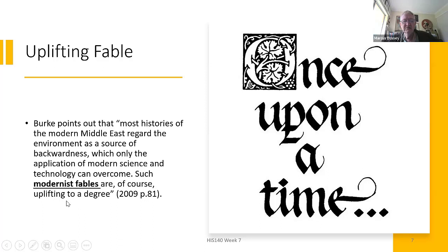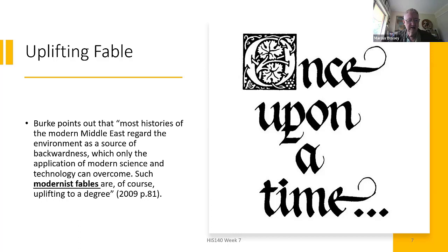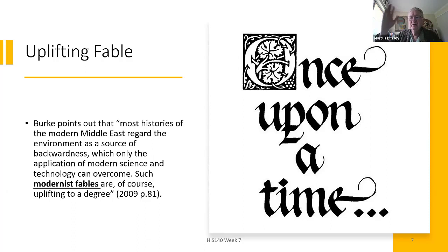I'm going to come back to that term — modernist fable — on the very last slide. Once upon a time, people lived in ignorance and didn't know what they were doing, and they kept screwing up the environment. It took people like Townsend to come along and turn farming into a science, increasing productivity — we had to throw all those lazy peasants off the land and privatise it. This is the kind of story that dominated the 19th and 20th centuries. We are now just starting to understand that massive monoculture isn't necessarily the best result.